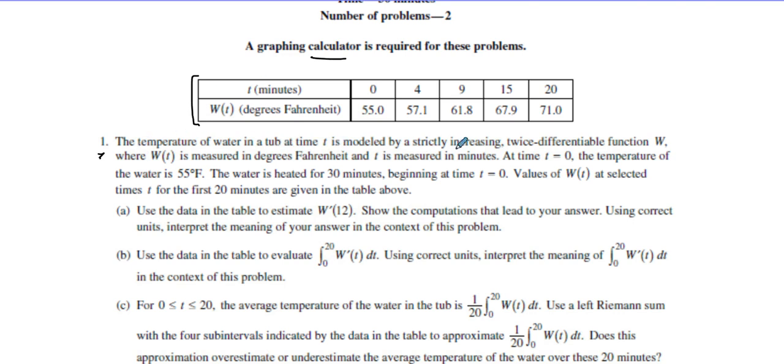What you have is this table. It says the temperature of water in a tub at time t is modeled by a strictly increasing, twice differentiable function W. W is twice differentiable, that means it is continuous because if it's differentiable it has to be continuous.